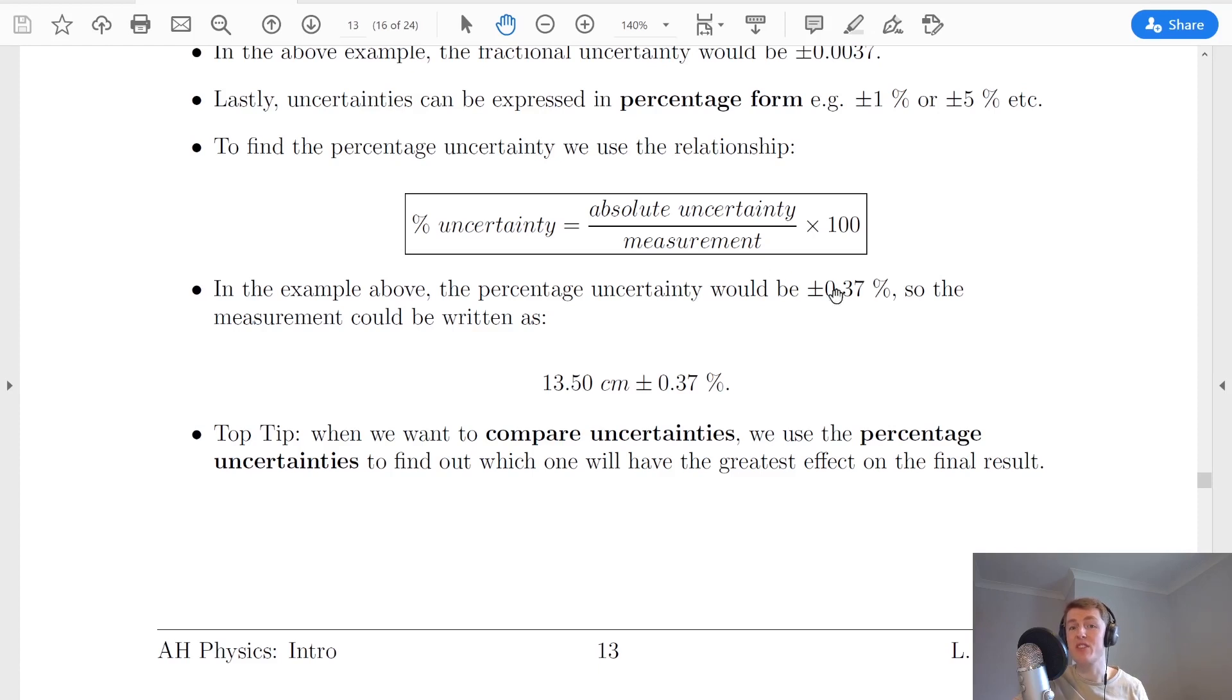Writing down this percentage uncertainty with our measurement we could state this as 13.50 cm ± 0.37%. Notice I've only put the unit after the first number because that is your percentage, not a value in centimeters. As a check, I could take 0.37% of 13.50 and I should find that I get my absolute uncertainty of 0.05 centimeters.